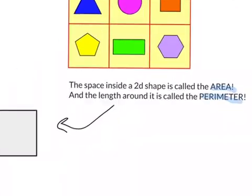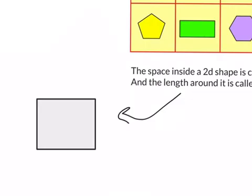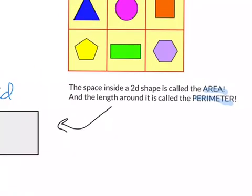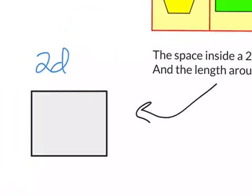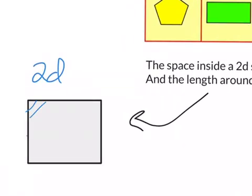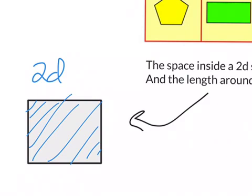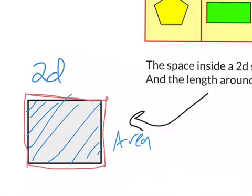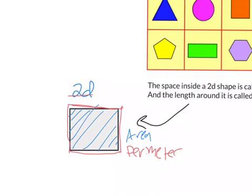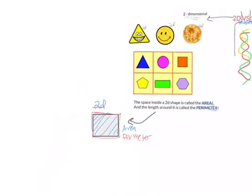And for example, like here, this is a 2D shape, because it's flat and there's no depth. And here, the space inside it, it's called the area. So basically, all the space inside this 2D shape is the area. And the length around this 2D shape, it's called the perimeter. Sorry for the terrible handwriting. And that is why it's important to know what 2D is.